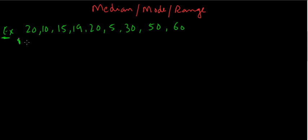So let's rearrange this. The smallest we have is 5, then we have 10, 15, 19, 20, 20 we have two times, then we have 30, then 50, and then 60.